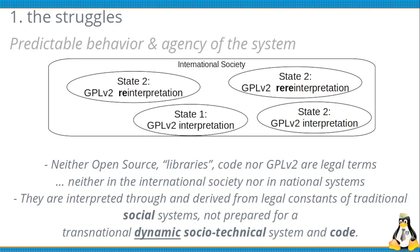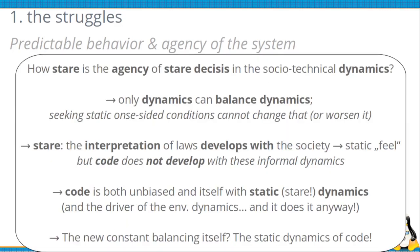In Germany, I can own something, possess something, and use something — but if I use a library, what's the difference to forking code? And what's the difference between a static link and a dynamic link of a library? This is heavily probabilistic in terms of the traditional system, and so I cannot have security here. Only dynamics can balance dynamics. If I try to get a static condition on one side, I cannot foresee how it will act when there is a change on the other side. In the current social system, the interpretation of laws develops with society, giving us a static feel through a passive process. But code does not develop with these informal dynamics — it's a completely different thing. That said, it's not an issue because code itself is unbiased — it's maths, it's physics — and it has a static dynamics, because we can anticipate how its dynamics will develop.